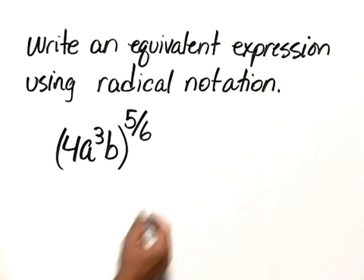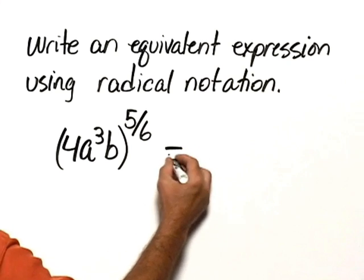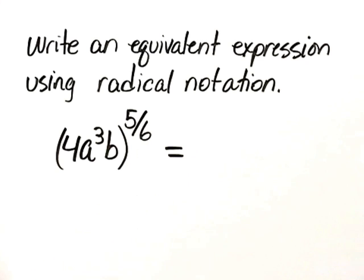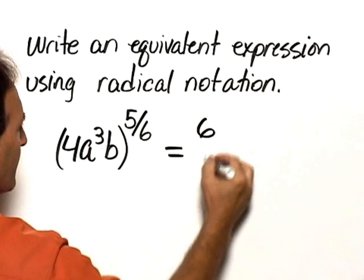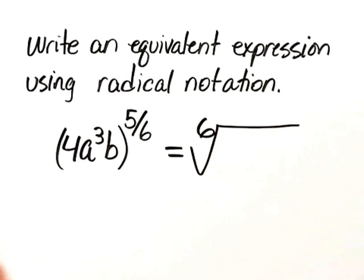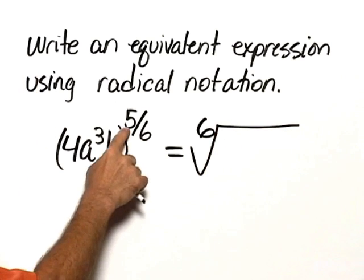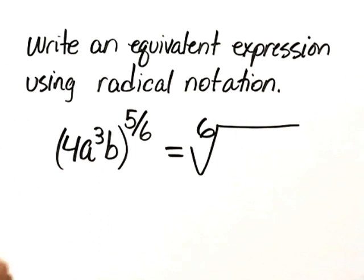The denominator of the fractional exponent becomes the root of the radical, so this would be the sixth root. And the 5 remains the power of the expression 4a cubed b.